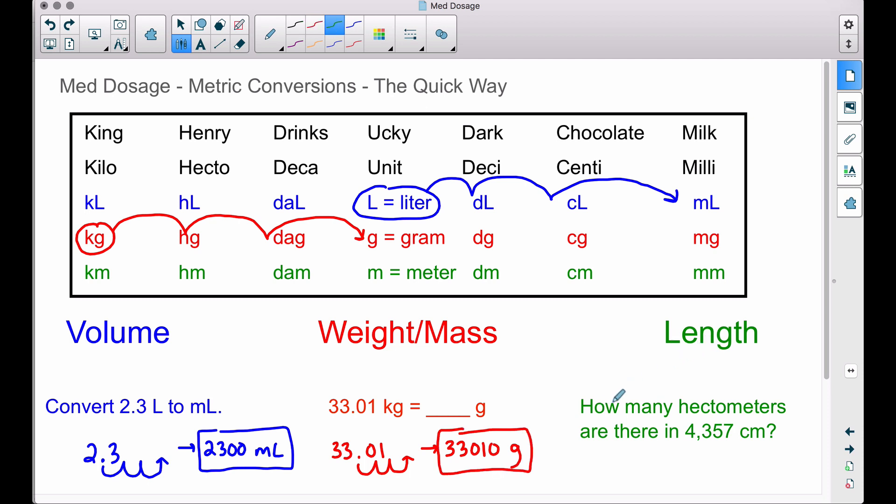Last but not least, let's talk about length. How many hectometers are there in four thousand three hundred fifty-seven centimeters? Centimeters is what we have, and we want to go to hectometers, so now we're going to move to the left.